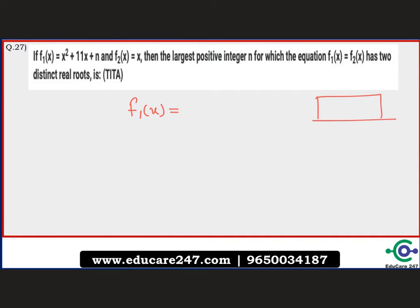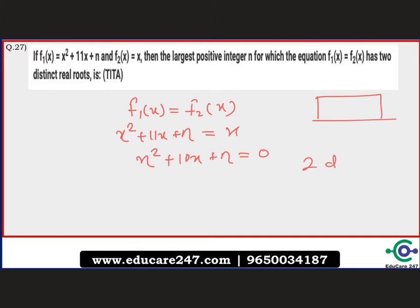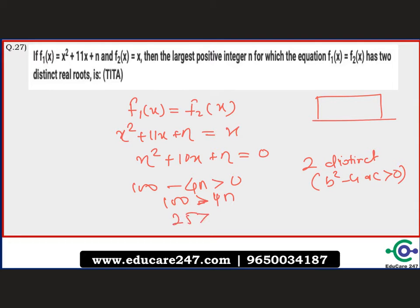Since f1(x) = f2(x), we compare both functions and get x² + 10x + n = 0. For this equation to have two distinct real roots, the discriminant b² - 4ac must be greater than 0. So 100 - 4n > 0, which means 100 > 4n, giving us n < 25. The maximum positive integer n can take is 24, so the answer is 24.